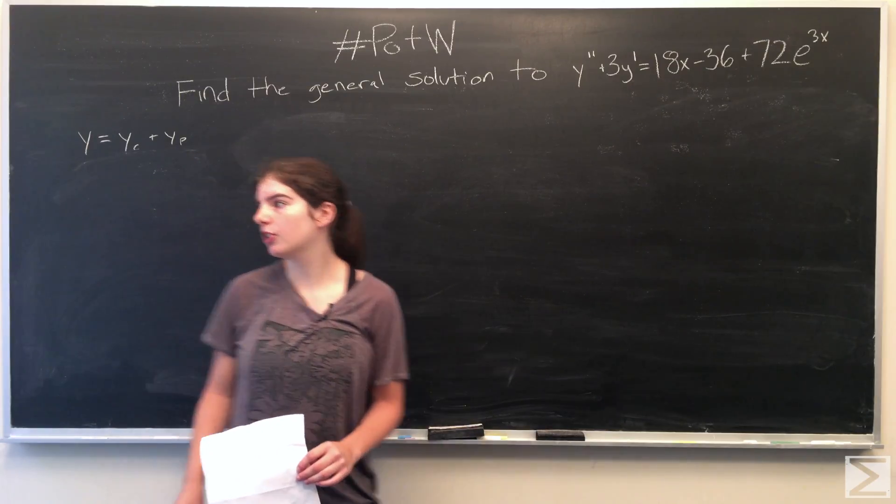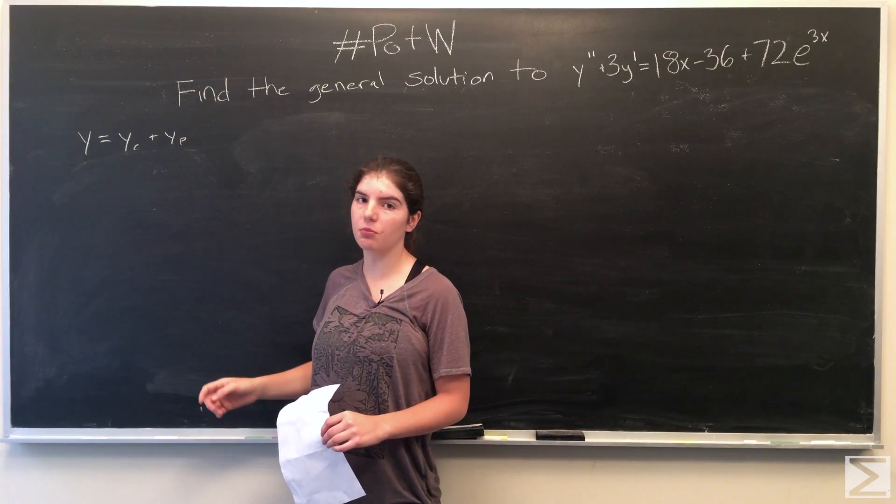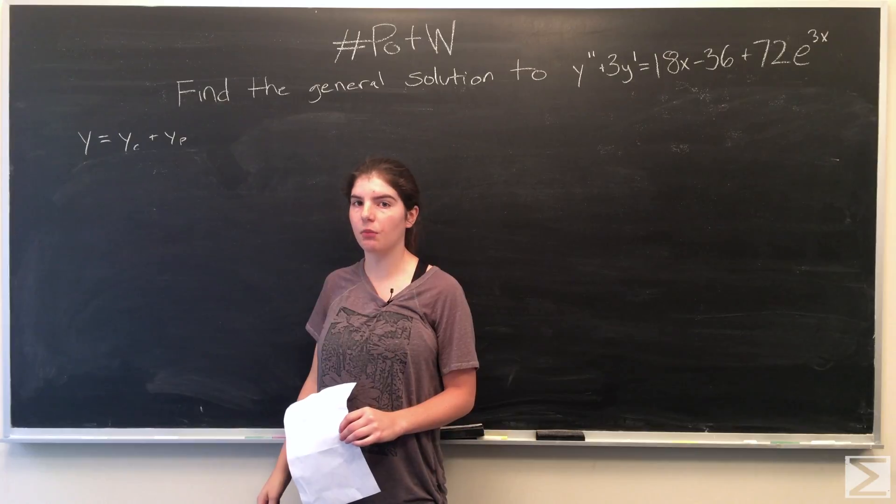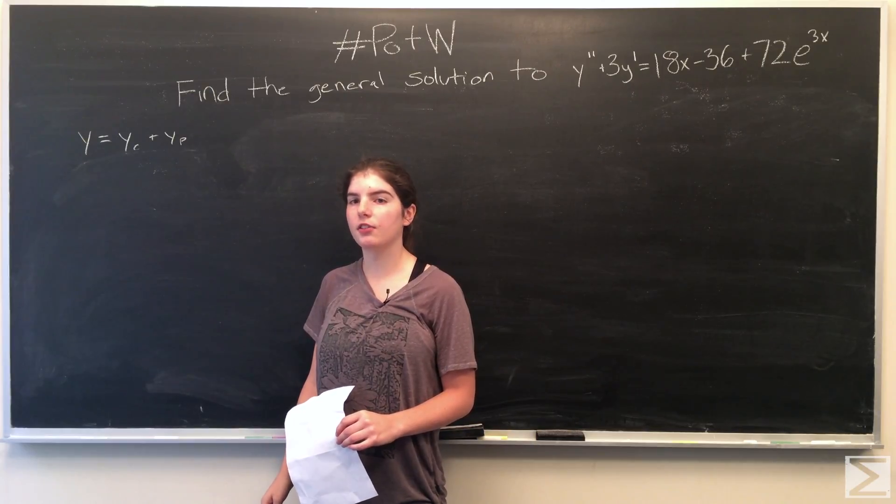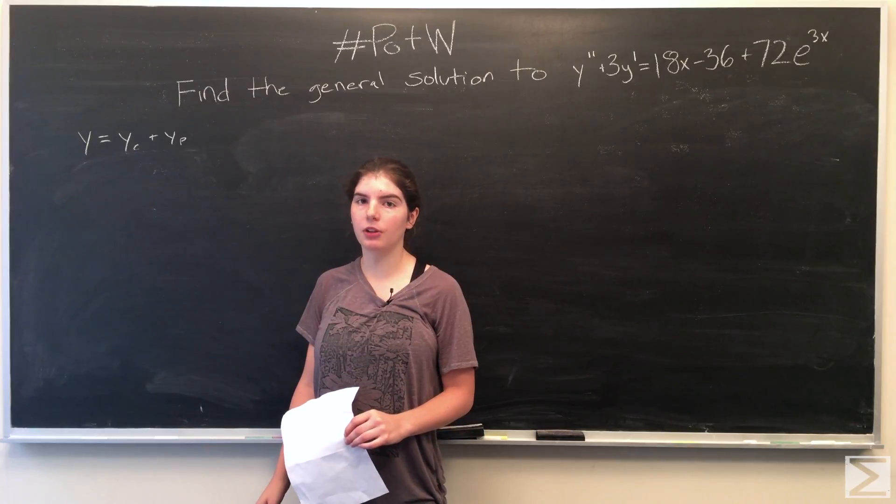So the general solution can be written as y equals y sub c plus y sub p, where y sub c is the complementary solution and y sub p is the particular solution. First, we're going to find the complementary solution.